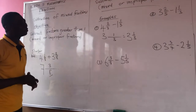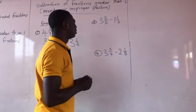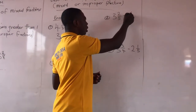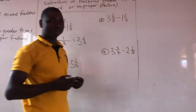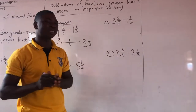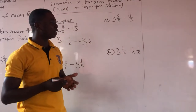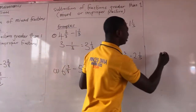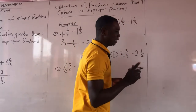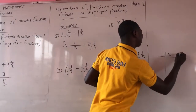Let's move to the second example. Example 2: 3 and 2 out of 5, minus 1 and 1 out of 3. This one, we are not having the same denominator, so it's unlike fractions. We have to find the LCM. The method we use is prime factorization — division and multiplication. We need to find the LCM of 5 and 3.